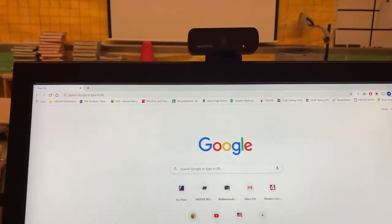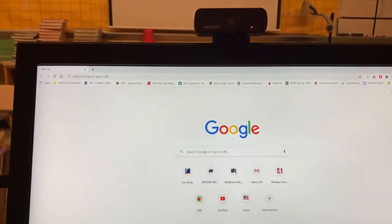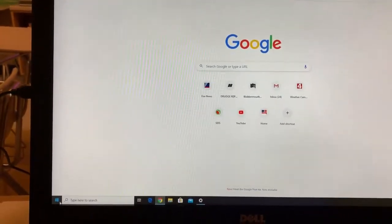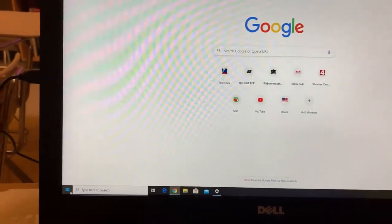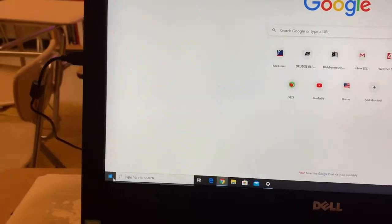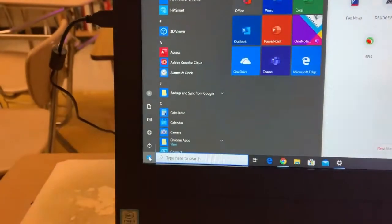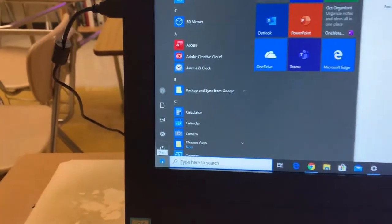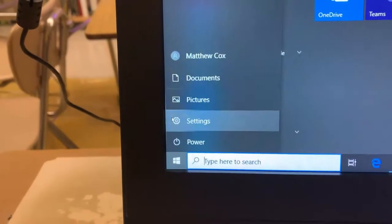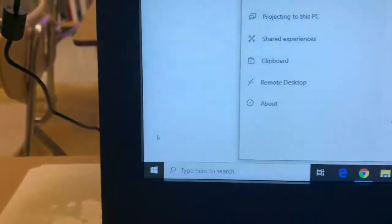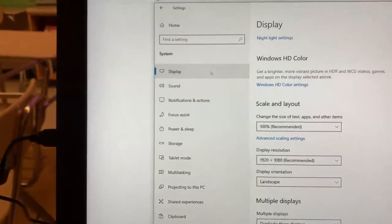Hello once again, once you have your webcam set up, you'll need to make some adjustments on your PC to make sure it's going to work properly. On a Windows 10 PC, click on the Windows icon on the bottom left hand side and then go over to the settings tab. Click on settings. You'll want to go to the display tab, so click on that.